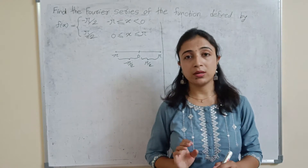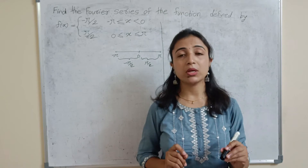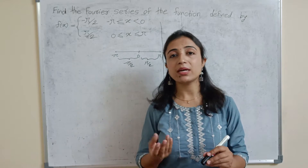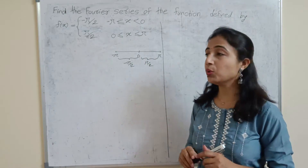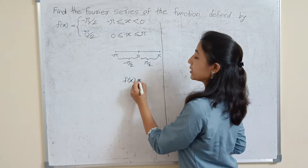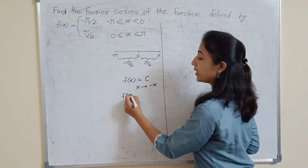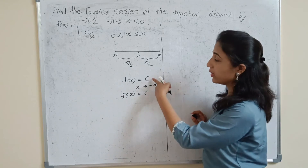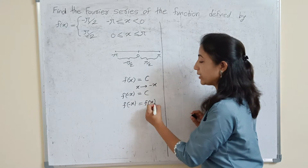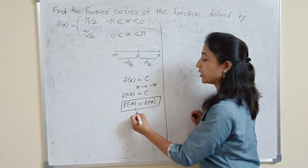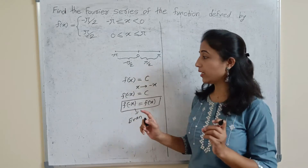Our function contains both values in the form of constants. Many students think that since it is a constant, it must be an even function. When f(x) equals some constant c, replacing x by minus x gives f(minus x) equals c, because there is no x — so no change in the function. Therefore f(minus x) equals f(x), which means a constant function is an even function by definition.